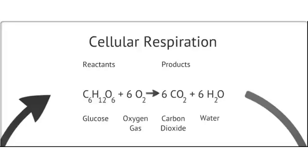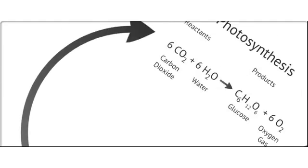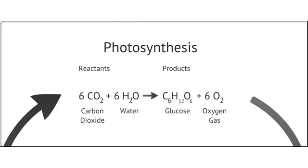In this process, glucose and oxygen gas are converted into carbon dioxide and water. Hopefully you are able to see that the products of photosynthesis are the reactants of cellular respiration, and that the products of cellular respiration are the reactants for photosynthesis.